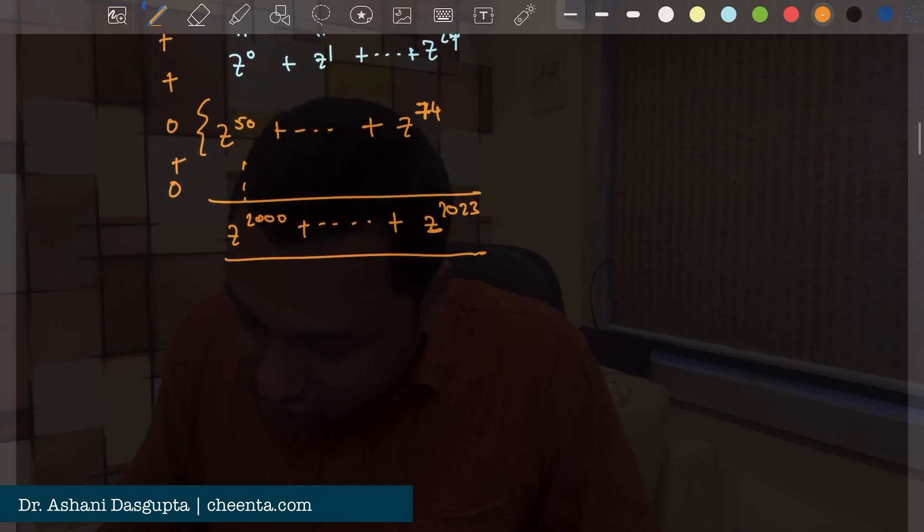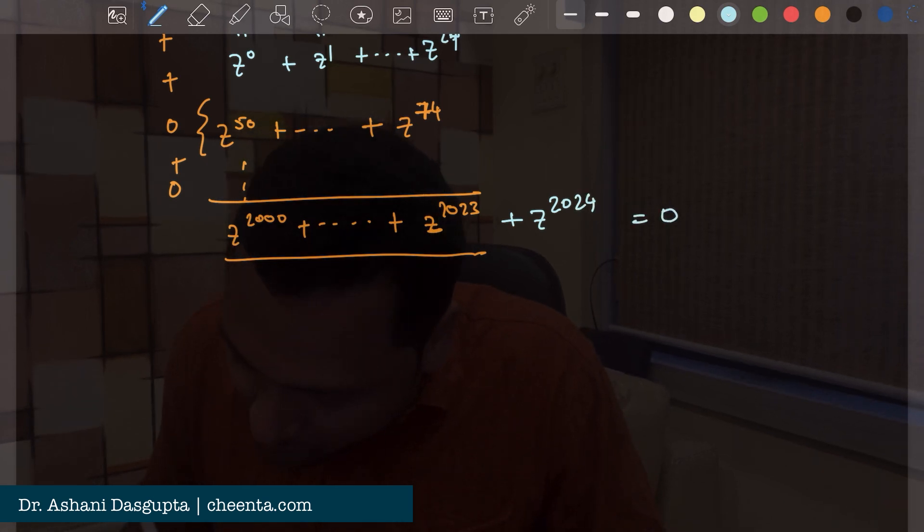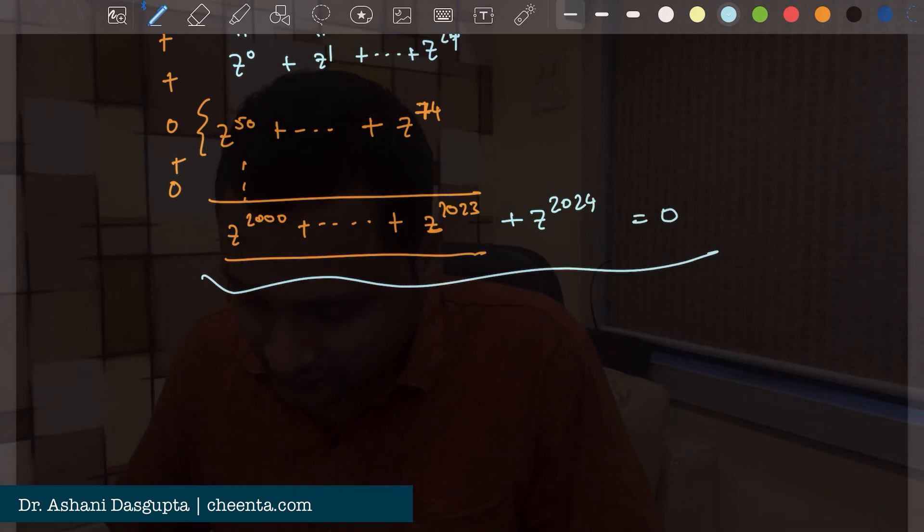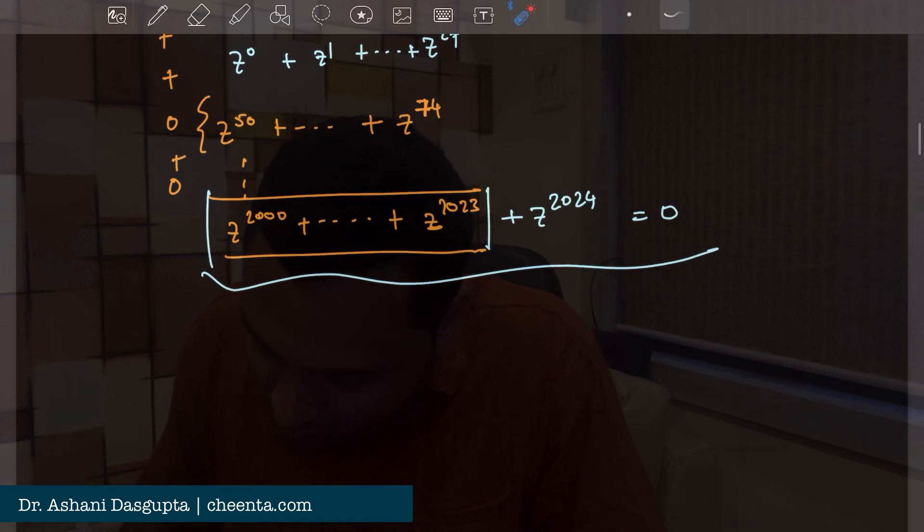Now this part is also easy because if I add z to the power 2024 to it then this sum would be 0. But I just want this much.